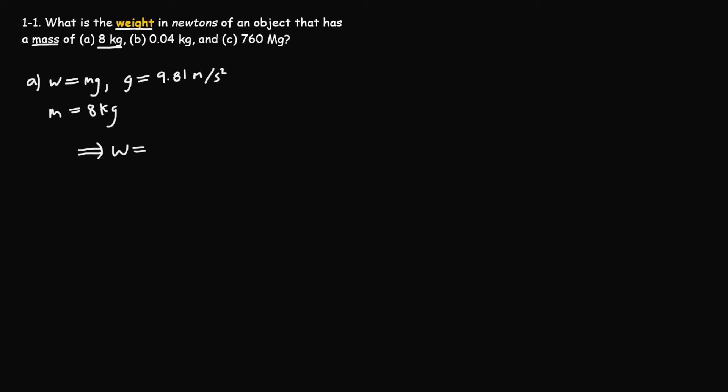So W equals 8 kilograms times 9.81 meters per second squared. Solving that in a calculator, we get 78.9, and the units are newtons, since newtons are equivalent to kilogram meters per second squared. That is our final answer.